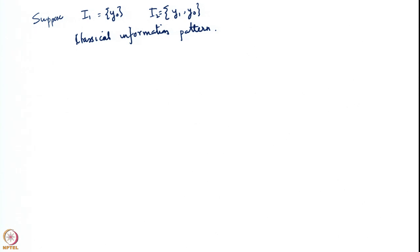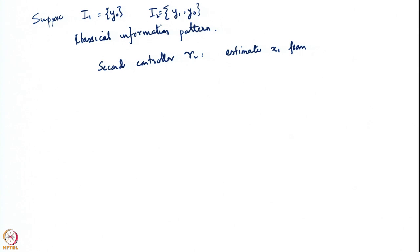Let us see what happens in this particular problem. The second controller, which is γ2, is attempting to estimate x1 from the information that he has. Earlier the problem was that he was trying to estimate x1 from y1 only, and y1 was x1 plus v.